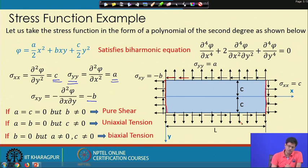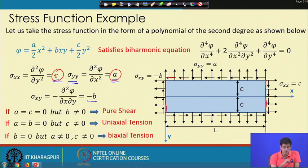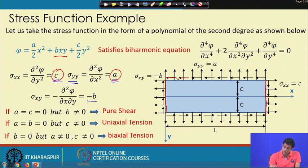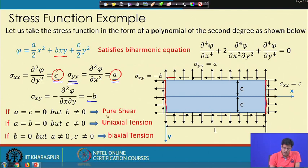If we take a = c = 0 and b ≠ 0, the stress function is just b·xy, which represents a case of pure shear — there is no axial force, only a pure shear condition.